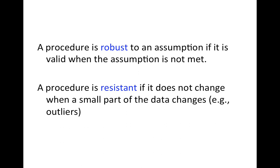Very similarly, a procedure is resistant if the answer you get is the same if you change a small part of the data. So if you all of a sudden have an outlier, the overall answer won't be influenced if a procedure is resistant.